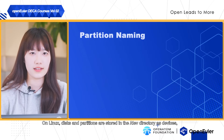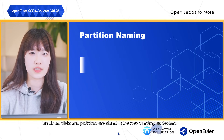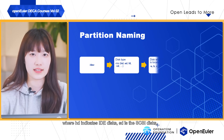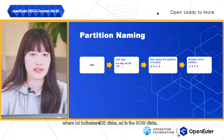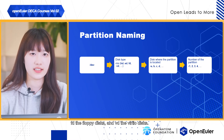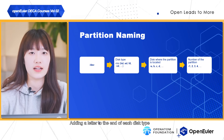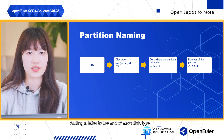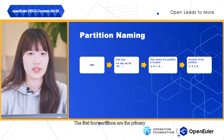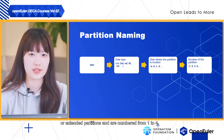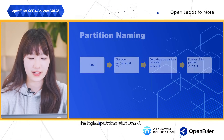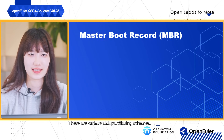On Linux, disks and partitions are stored in a /dev directory as devices, where HD indicates IDE disks, SD is SCSI disks, FD the floppy disks, and VD the virtual disks. Adding a letter to the end of each disk type specifies the sequence number of the disks. The first four partitions are the primary or extended partitions and are numbered from 1 to 4. The logical partitions start from 5.